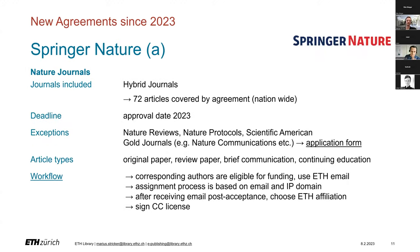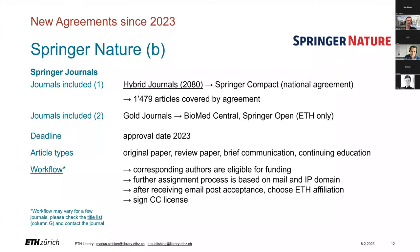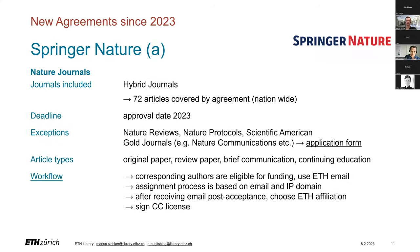Springer Nature is divided into two sections: A, the Nature Journals, and B, the Springer Journals. For Nature Journals, there is a national contingent where 72 articles in 2023 are covered for APC-free publishing. A few Nature Journals are excluded from this deal, namely Nature Reviews, Nature Protocols, Scientific American, and the Gold Journals. The assignment of your publication to the Swiss National Agreement is made by mail and IP domain recognition. Be aware that for all Nature and Springer Journals, the approval date is relevant for funding — this is the date the library approves the APC request sent by Springer after your publication has been accepted.